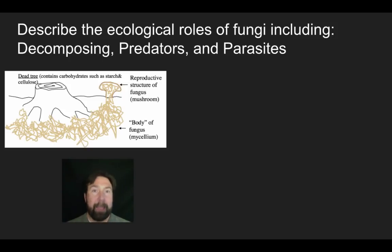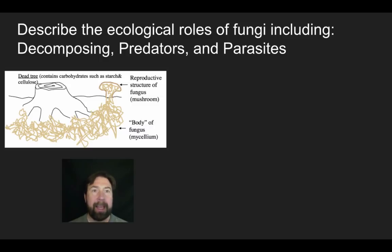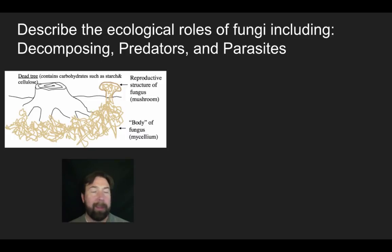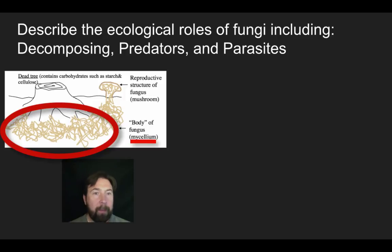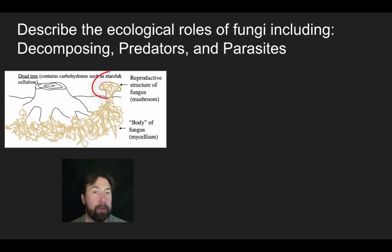Let's talk about the niches fungi occupy. One of the most common is that of a decomposer. A dead tree contains all kinds of carbohydrates such as starches and cellulose, and around dead trees you tend to find lots of fungi. The underground portion of the fungus interacting with those tree roots is the mycelium. When ready to reproduce, fungi put up a reproductive structure such as a mushroom, which spreads spores and allows the creation of new fungi.